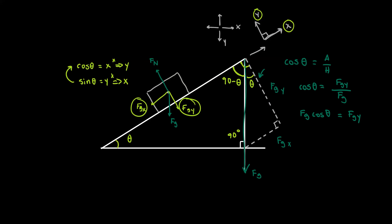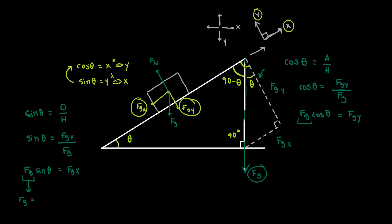Similarly, we can do something like that with sine. We know that sin theta equals opposite over hypotenuse, and our overall gravity Fg is the hypotenuse. So sin theta equals the x-component of gravity divided by Fg. Rearranging, Fg sin theta equals the x-component of gravity. Breaking down Fg, we see that Fg equals mg, so we're left with two expressions: mg sin theta equals the x-component of gravity and mg cos theta equals the y-component of gravity.